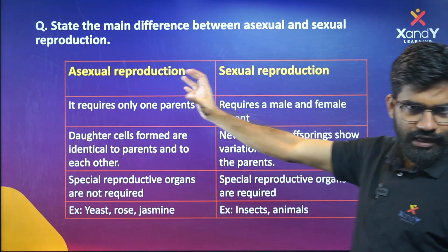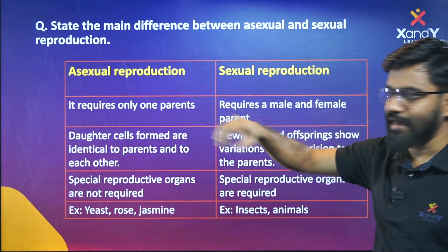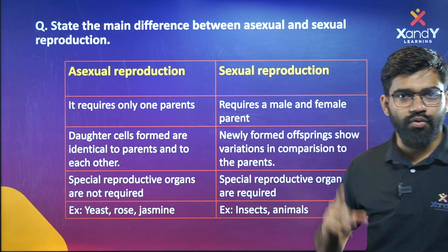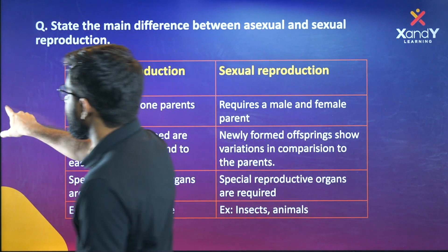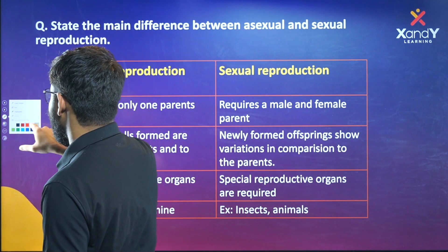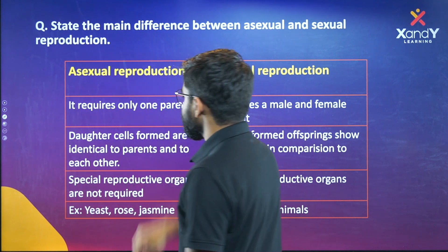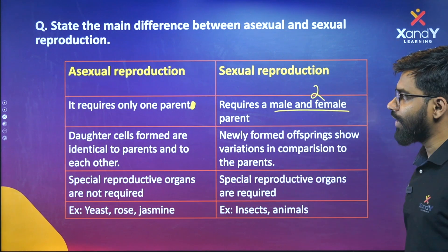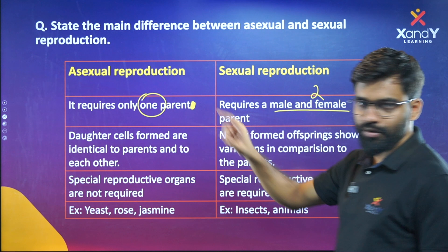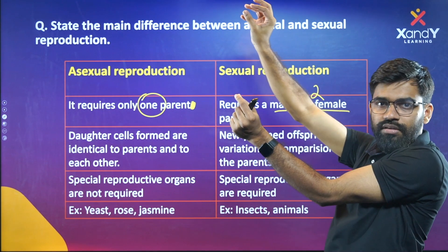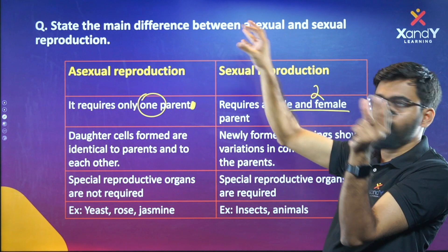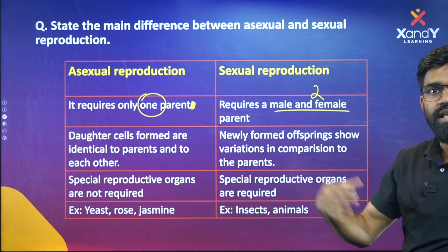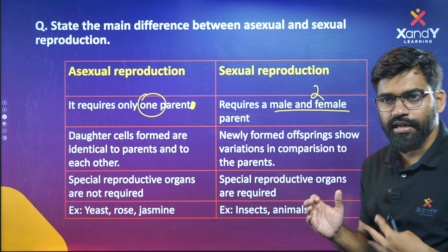Asexual reproduction requires only one parent. It involves only one parent, not two.